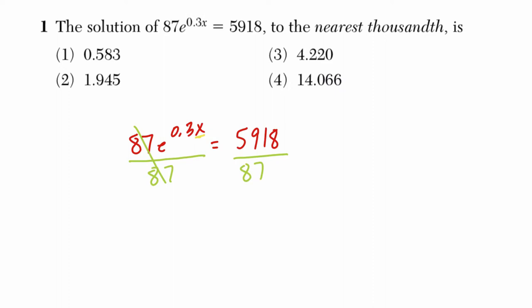Just playing with the colors here. Alright, so we have e to the 0.3x equals this quotient right there, which is 5918 over 87.